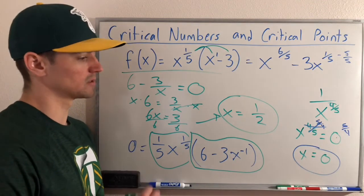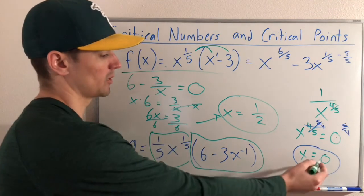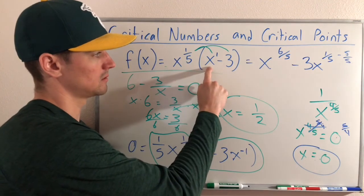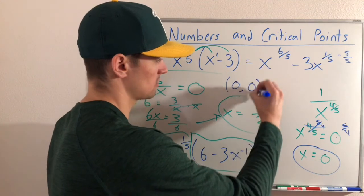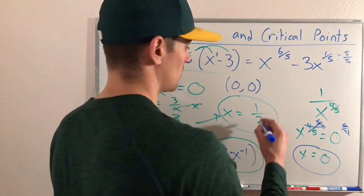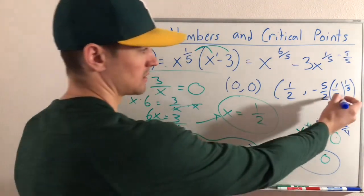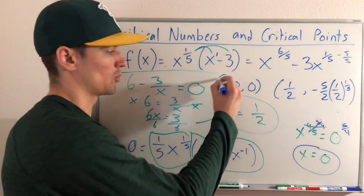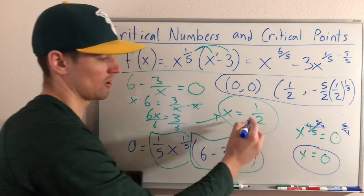Now we want to find our critical points by plugging the critical numbers into our original function. Plugging in x equals 0 gives us 0 times negative 3, which is 0, so our critical point is (0, 0). Plugging in x equals 1/2 gives a less clean y value — we get (1/2) times (1/2 minus 3) times (1/2) to the 1/5, which simplifies to a messy number, giving us the critical point approximately at (1/2, that value). These correspond to our critical values of 0 and 1/2.